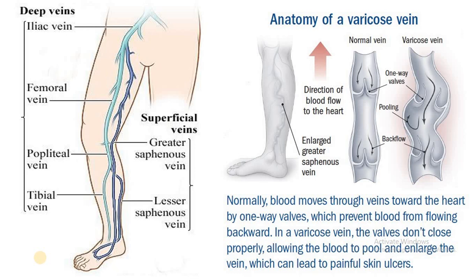Before we proceed to clinical examination, we must understand the anatomy of the veins of the lower limb. The deep veins include the iliac vein, which divides into the femoral vein, then becomes the popliteal vein, and then the tibial vein. The superficial veins include the great saphenous vein, which is present medially in the lower limb, and the small saphenous vein, which is present laterally and posteriorly. In a normal vein, blood flow is unidirectional, but in a varicose vein there is backflow.